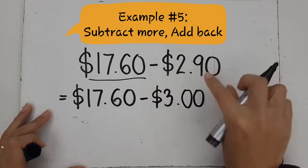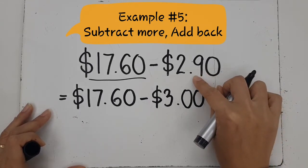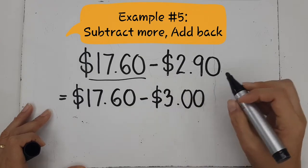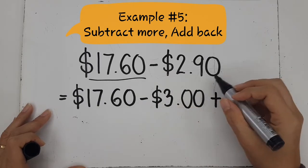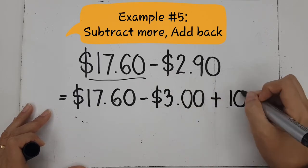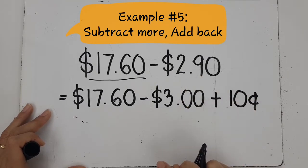Now, if I take away more than I am supposed to take away, that means I change the question. How do I fix it? If I subtract more, I have to add it back. And how much do I add? I need to add 10 cents because $3 is 10 cents more than $2.90.